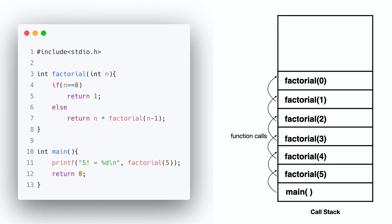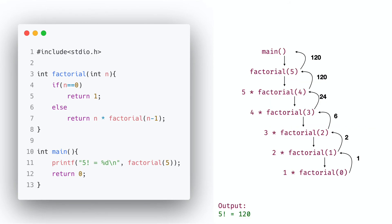Let's trace this program on the call stack. First, the main function is called, then in turn it calls factorial(5), then factorial(4), factorial(3), factorial(2), then factorial(1), then factorial(0) is called. Since the cost is 0, we return 1. Factorial(0) returns value 1. Factorial(1) is 1 times 1, result 1 is returned to factorial(2). Then factorial(2) returns result to factorial(3), factorial(3) to factorial(4), factorial(4) returns to factorial(5), then factorial(5) returns to the main method. The main method is called and the value 5 factorial equals to 120.